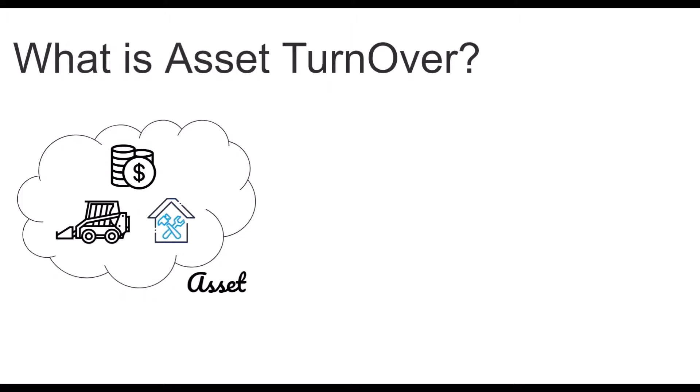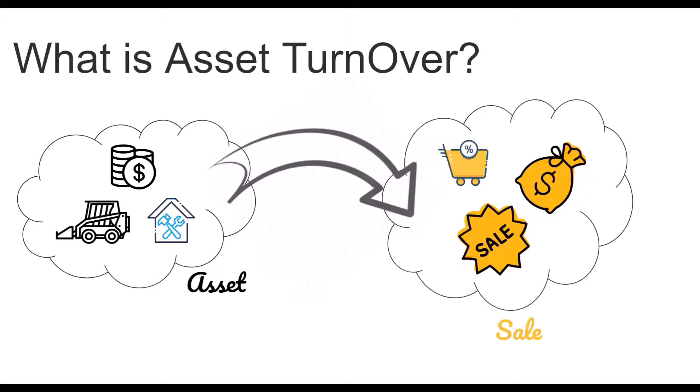Let's understand what asset turnover is. Say you want to set up a business — to prepare some product, you need to invest in a plant, a building, machineries, and all those things. So to develop a product, you set up a plant. That plant, that building, is basically the asset of your business. You utilize that asset to make a product, which you then sell to the market and earn money.